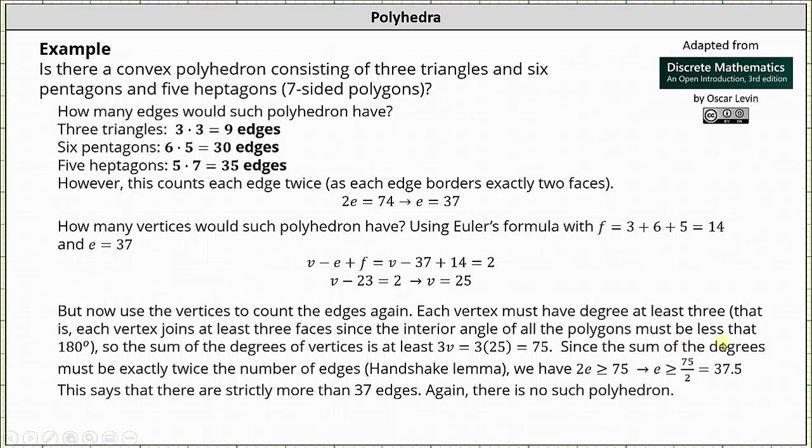Since the sum of the degrees must be exactly twice the number of edges from the handshake lemma, we have 2e ≥ 75. And if we solve this inequality for e, notice we get e ≥ 37.5. This says that there are strictly more than 37 edges. And this contradicts what we found above where we found e = 37.